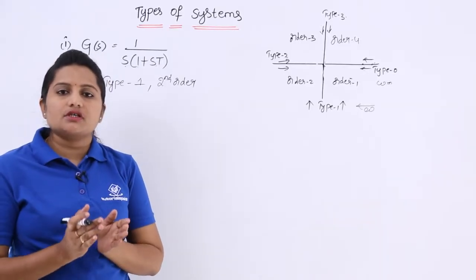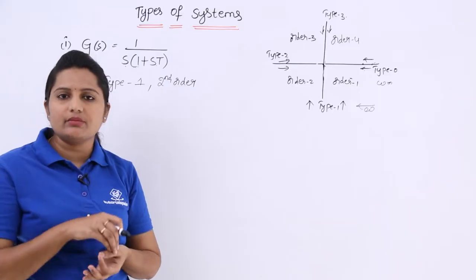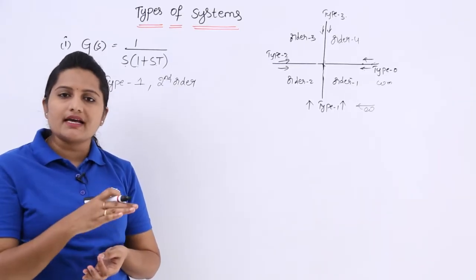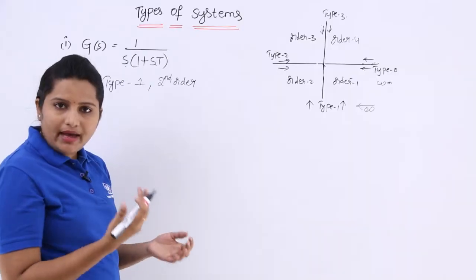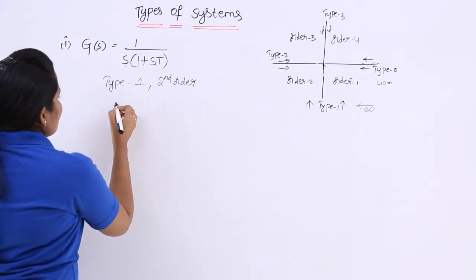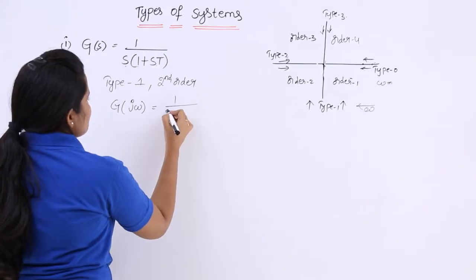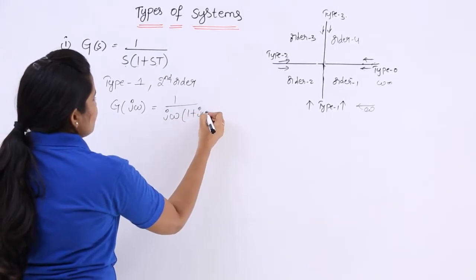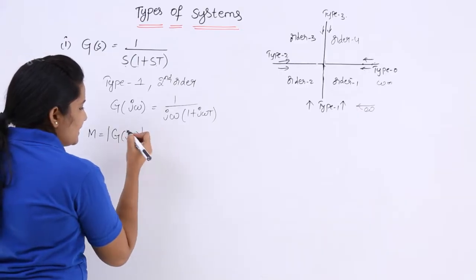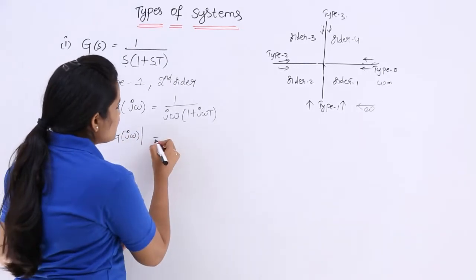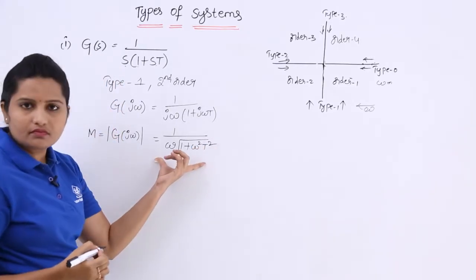To draw the polar plot or Nyquist plot, we need to know the magnitude and phase of the given transfer function. The polar plot is nothing but the plot of magnitude versus phase of the transfer function. Replacing S with jω, the transfer function becomes G(jω) = 1 / [jω(1 + jωT)]. The magnitude is: |G(jω)| = 1 / [ω √(1 + ω²T²)].